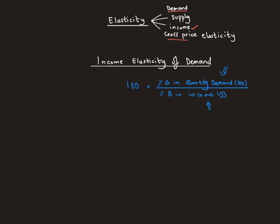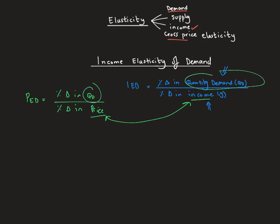In simple terms, this equation is trying to find out what happens when your income increases or decreases and its effect on consumption or quantity demanded. Going back to price elasticity of demand, we had a formula: percentage change in quantity demanded over the percentage change in price. The only difference between the two formulas is what the denominator represents — income versus price.